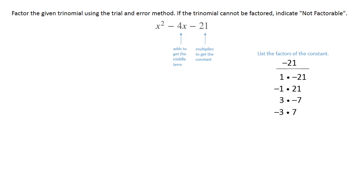You look at your list and see which of those is gonna add together to get that middle term, that negative 4. And it looks like the positive 3 and the negative 7, because 3 plus negative 7 is negative 4.